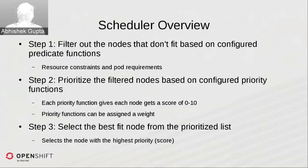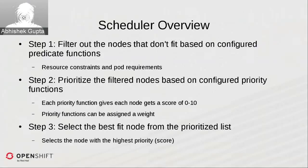In the second step, the filtered nodes are prioritized to find the best fit. Each priority function gives a score of 0 to 10 to each node. You can also assign a weight to a priority function, allowing multiple priority functions with weighted scores for more granular control over the prioritization algorithm.